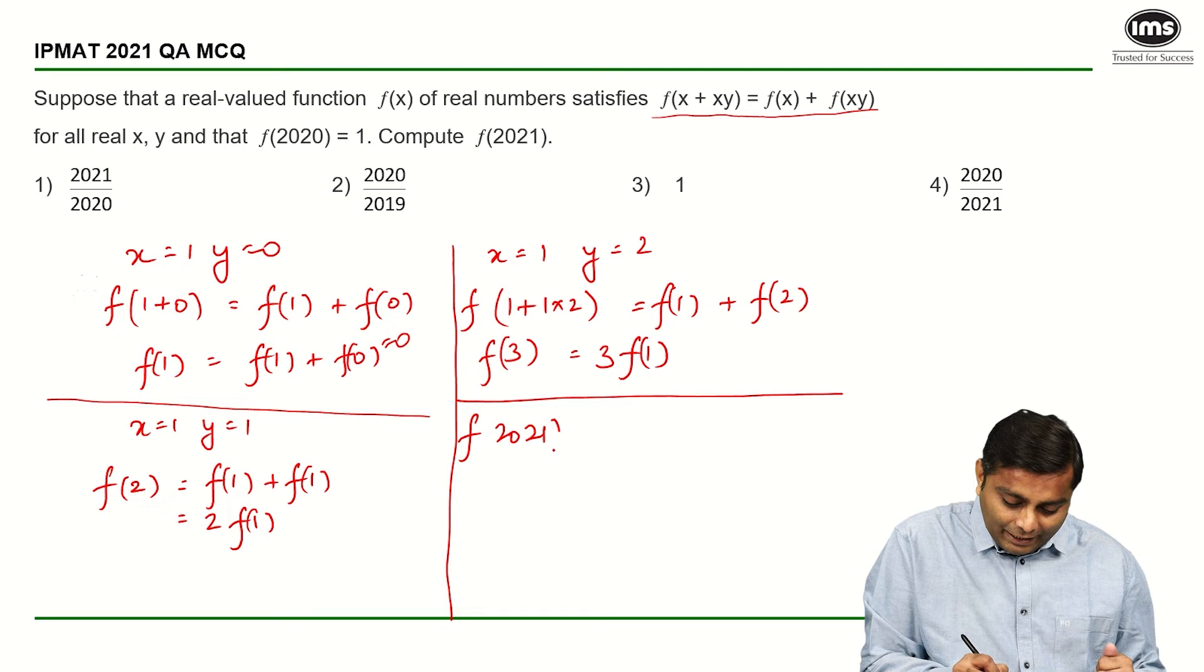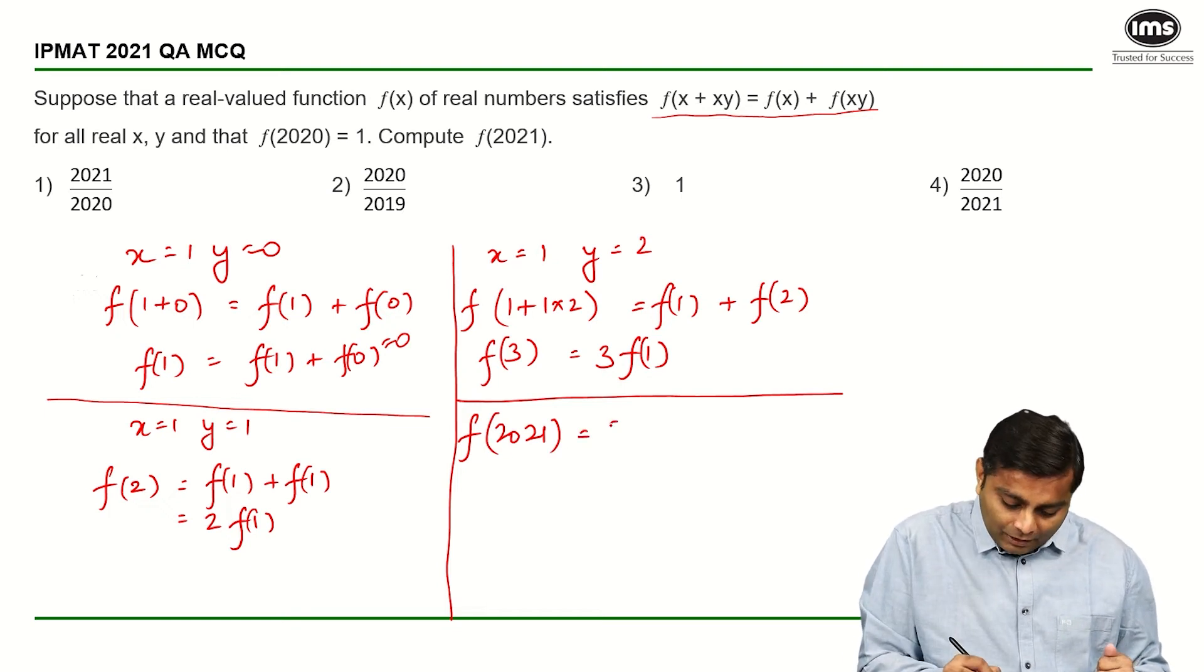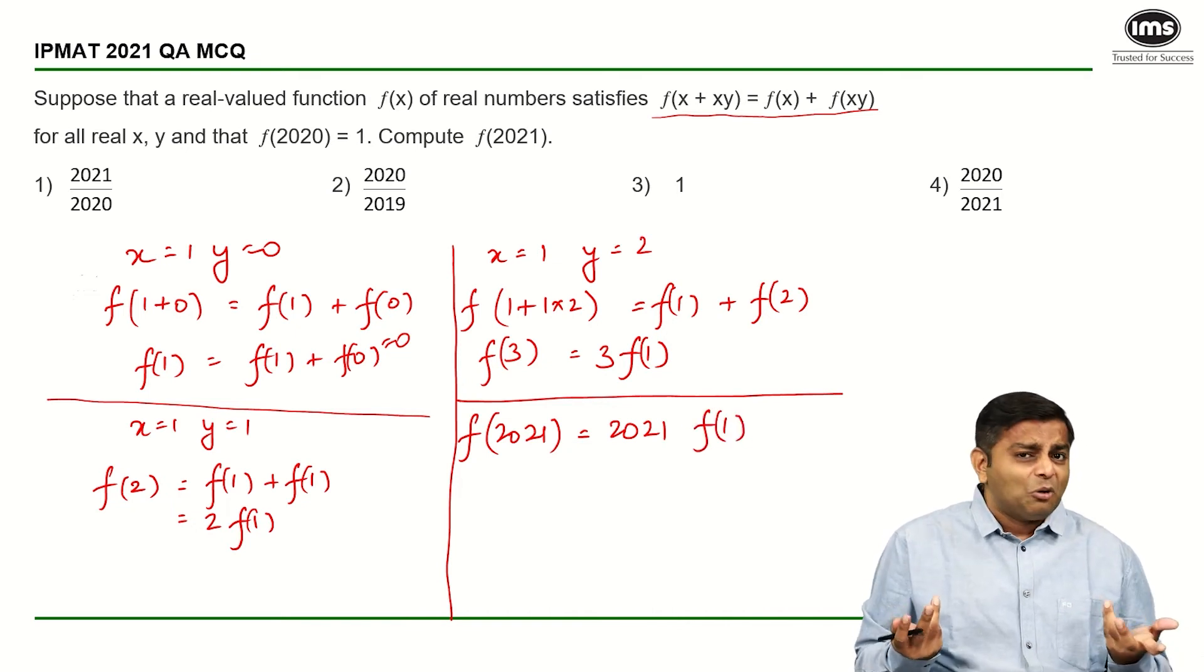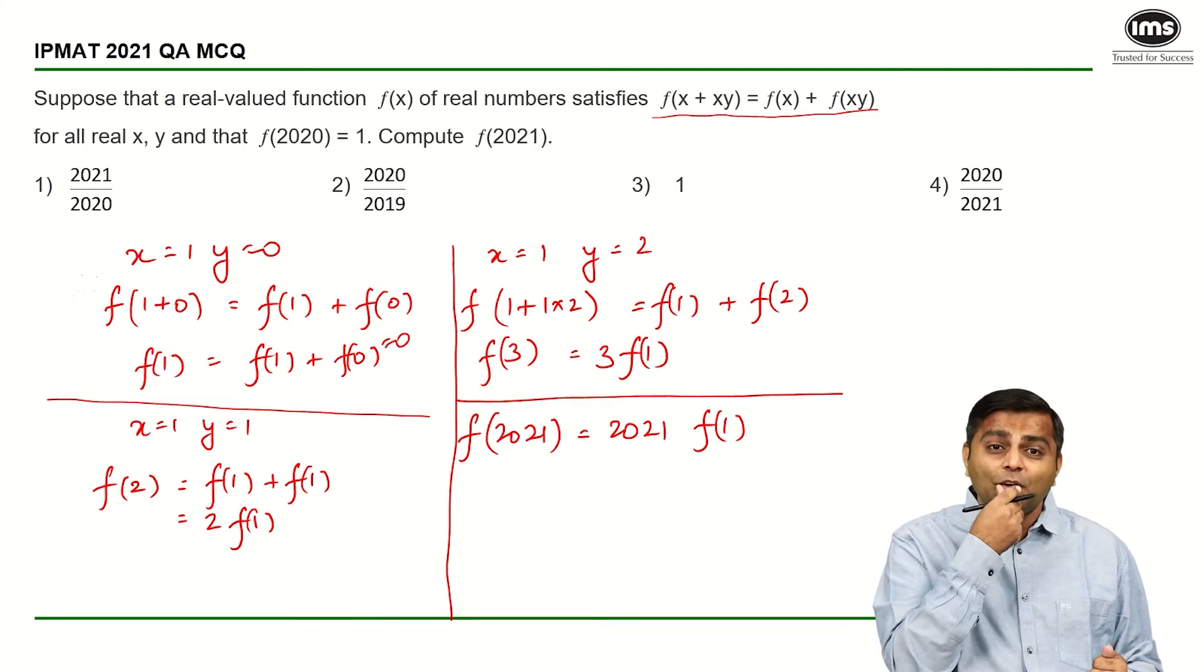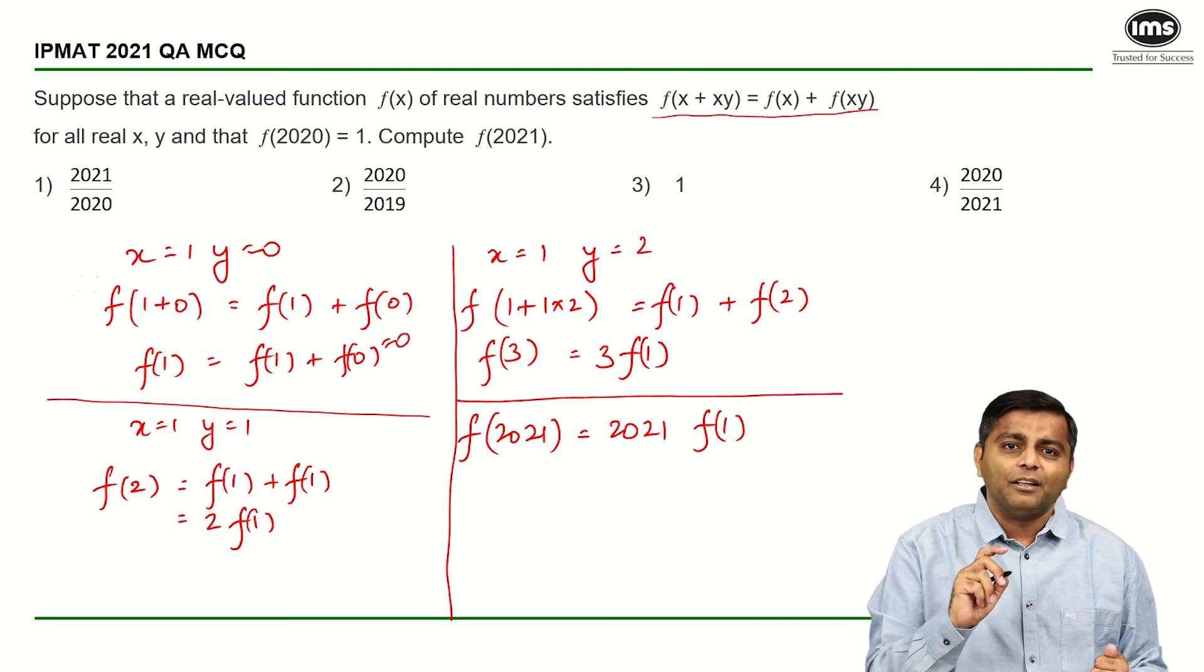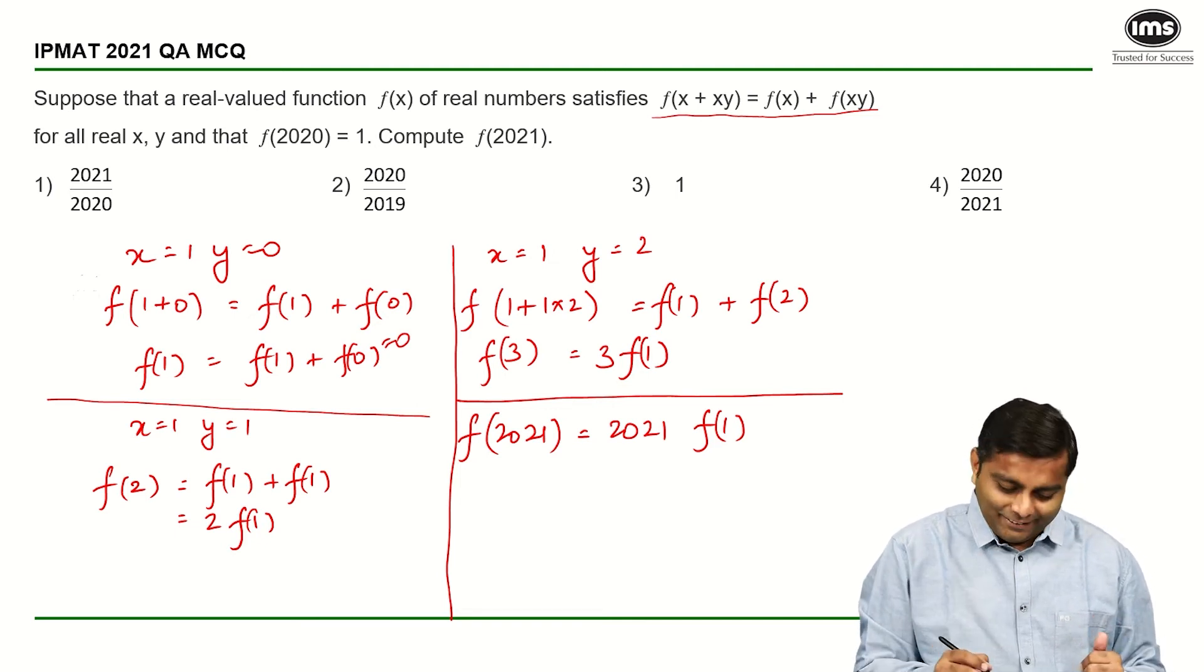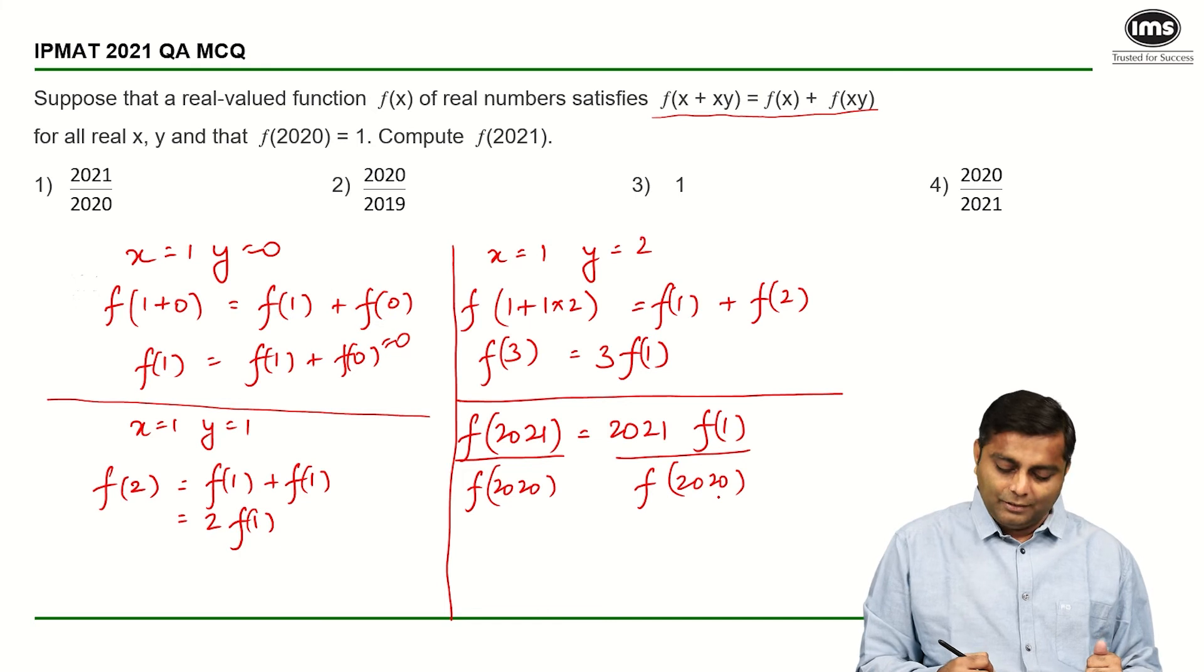We are sorted which means now we can directly jump to 2021. f(2021) is going to be 2021 times f(1). But I really do not know what to do with it because I do not know the value of f(1). What we do here is divide both the sides by f(2020). Why? Because the value is 1, so it will not really matter. I just do f(2020) in the denominator, and here also f(2020) in the denominator.